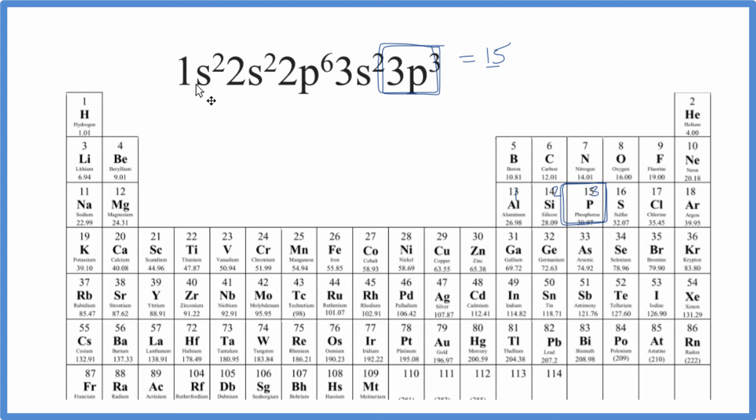So the electron configuration, 1s2, 2s2, 2p6, 3s2, 3p3, that's going to be phosphorus, just like we found before.